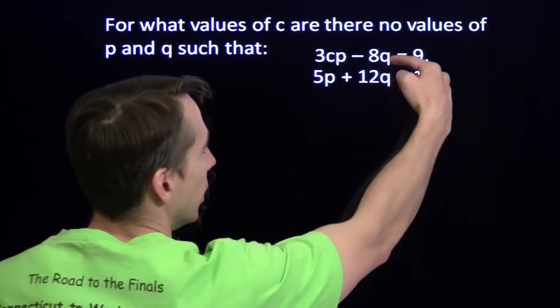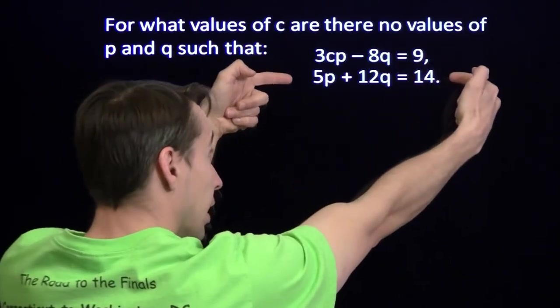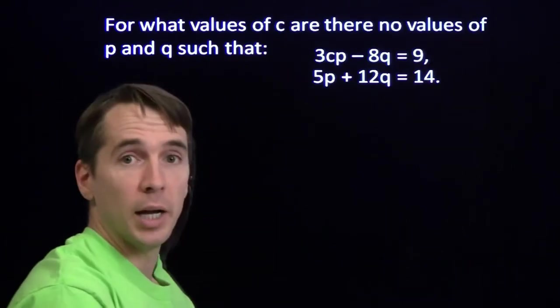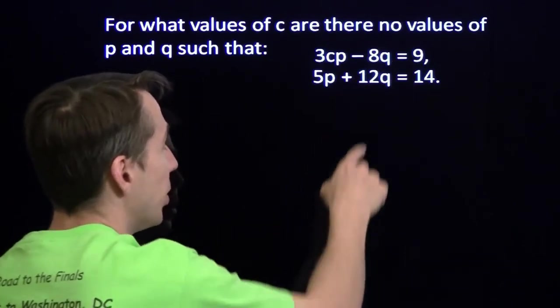Now, the easiest thing will be to multiply this equation, both sides of this equation, by 3 and both sides of this equation by 2. And that will let us set up an elimination of q.